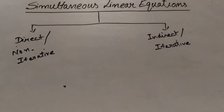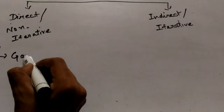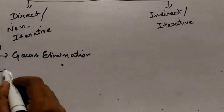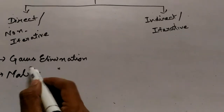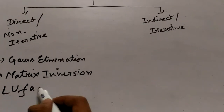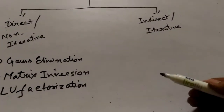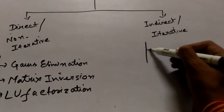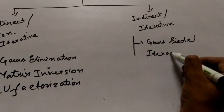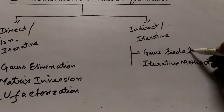Direct methods include Gauss elimination, matrix inversion, and LU factorization. Indirect or iterative methods include the Gauss-Seidel iterative method.